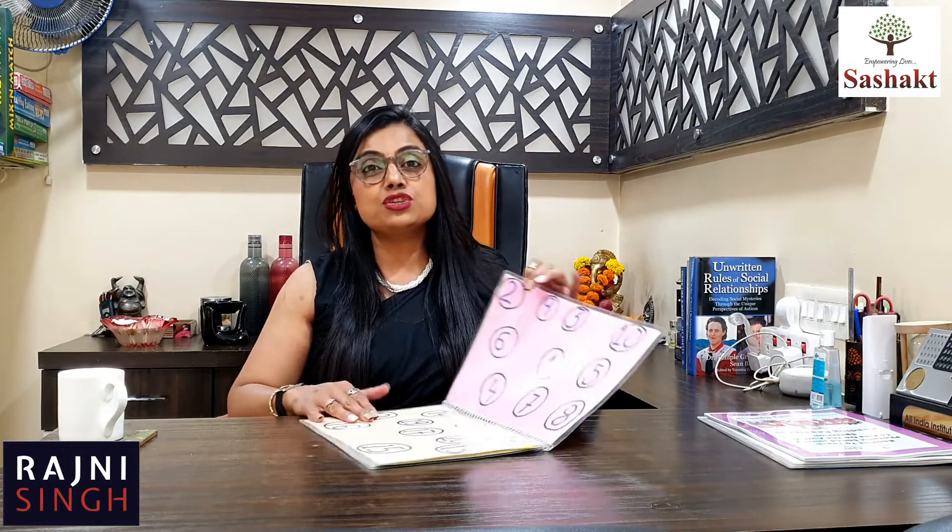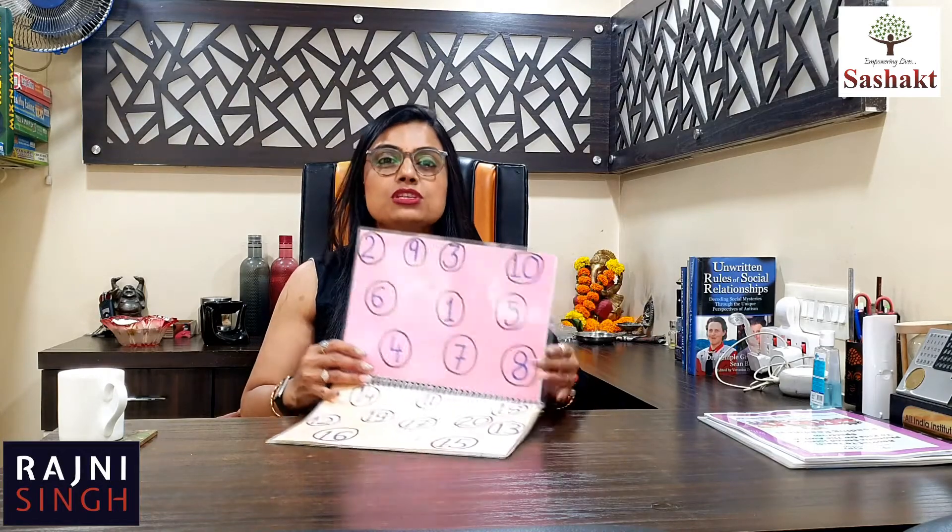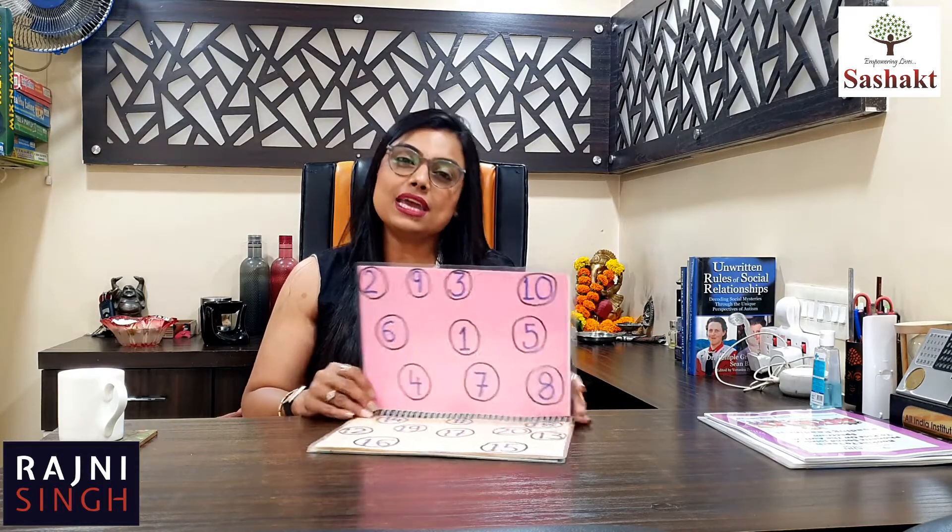Today we are first taking up the concept of number identification till 20. Like in previous videos, do tangible — big numbers. You can take wooden numbers or glitter numbers. Put them together so the kid understands: after 10 comes 11, 12, 13. You could create numbers like these.